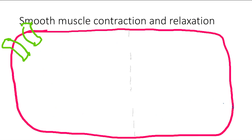Going into smooth muscle contraction and relaxation — remember there's skeletal muscle, smooth muscle, and cardiac muscle. In smooth muscle, you're going to get an action potential, causing membrane depolarization. Now you have voltage-sensitive calcium channels, so calcium ions come in.